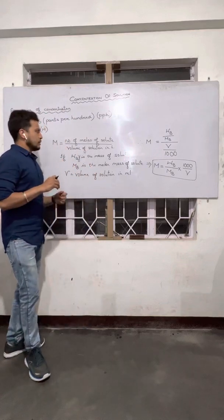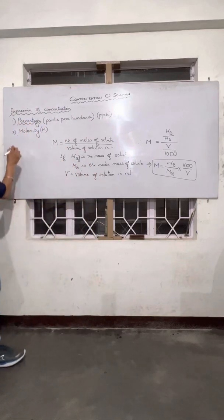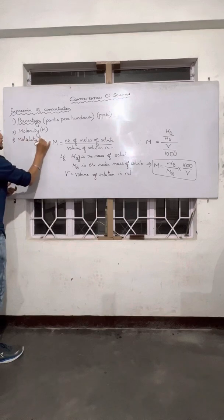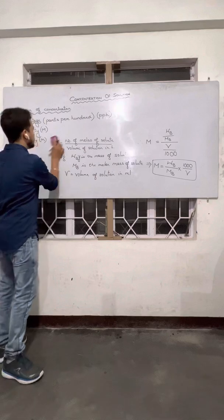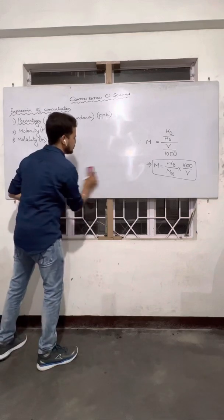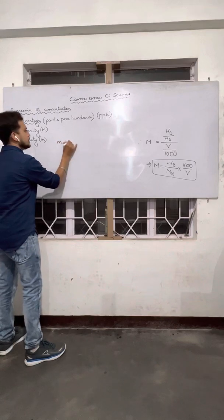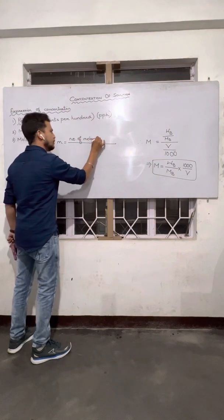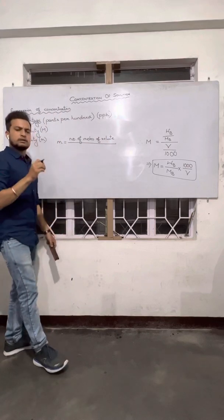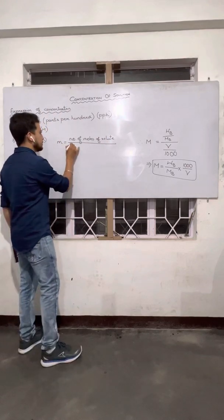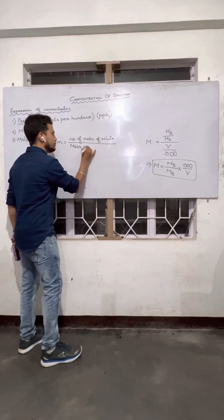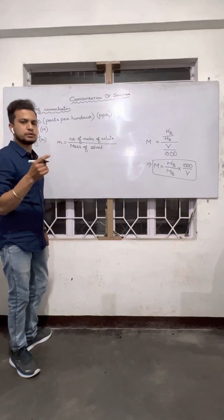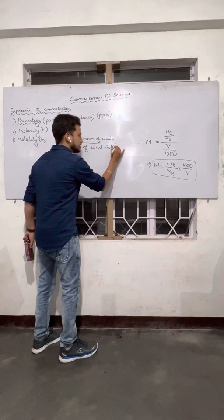Next, we move on to another way of expressing concentration, and that is molality, expressed as small m. Molality's definition is quite similar: molality is nothing but the number of moles of solute. But here, instead of volume of solution, it is the mass of solvent — very important. Most students make a mistake here: it is not the mass of solution, it is the mass of the solvent in kg.